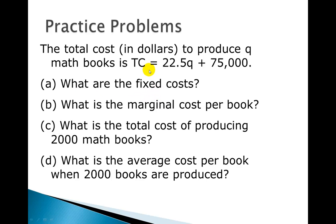You may recall, for the formula for total cost, it's variable cost plus fixed cost. This 75,000 has nothing to do with Q. It doesn't matter how many books we produce, the 75,000 is our fixed cost.